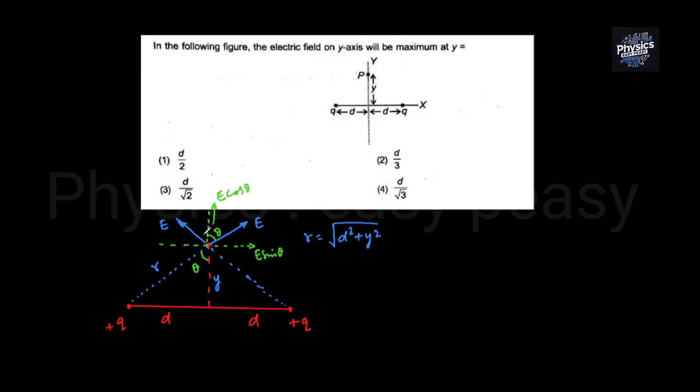The y-directional component is E sine theta, and this is E sine theta. Along the x-axis, these components cancel out. The net field is just along the y-axis, so the net field is 2 times E cos theta.